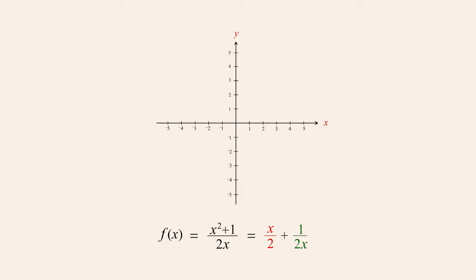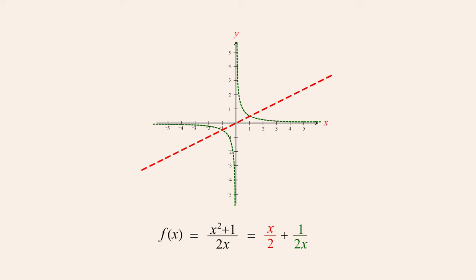On the other hand, graphing the first term, x over two, we see that for large positive and negative values of x, this term's value continues to grow. So when these two terms are added to produce the function, for large positive or negative x values, the contribution of the term one over two x becomes insignificant, and so the function's value approaches the value of the remaining term, x over two. Therefore, x over two is the function's oblique asymptote.